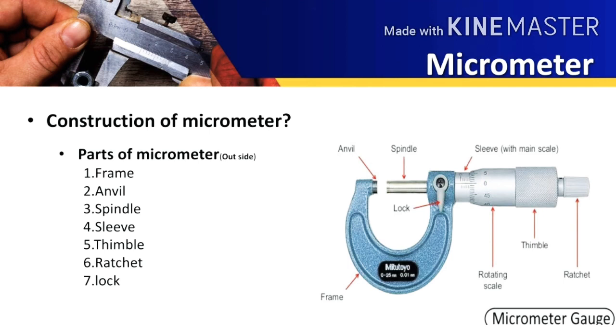So let us see the construction or the parts of micrometer. The first one is the frame which supports the whole mechanism of the micrometer. The shape of the frame is like the English alphabet U.